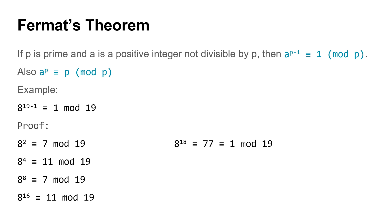Here it has been depicted with an example. I have taken 8 to the power (19−1) is congruent to 1 mod 19, where the value of a is 8 and the value of p is 19. p is 19, which is a prime number, and a is the positive integer 8. Also, 8 should not be divisible by p — 8 is not divisible by 19, so both conditions are satisfied. Now according to Fermat's theorem, we check whether 8 to the power 18 is congruent to 1 mod 19.